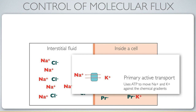Potassium is transported in the opposite direction. This requires energy because it's moving those ions against their chemical concentration difference across the membrane, and that energy is supplied by ATP.